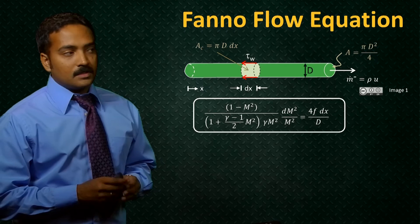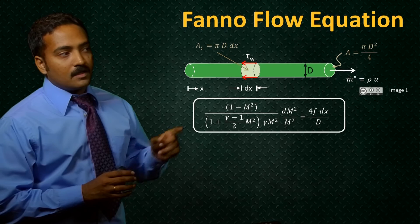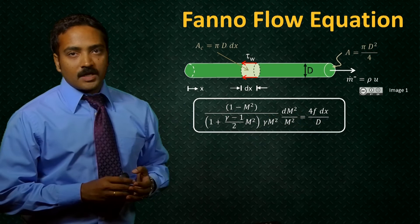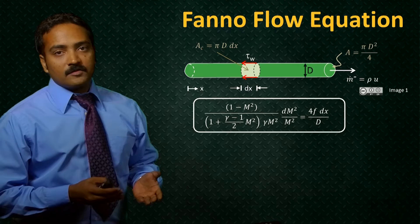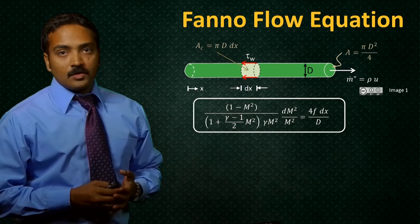Now I'd like to focus on what this mathematical expression is telling us. To do that, let me look at the right hand side, which is 4 times f times dx over d. Now as we know, the friction coefficient f is a positive number, so is dx as well as d, which means the right hand side is all positive. Which means for the equation to be true, the left hand side also needs to be positive.